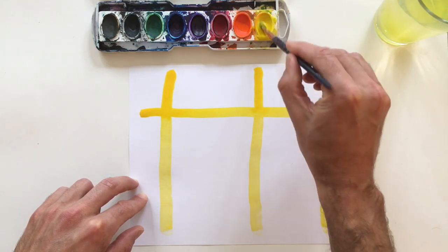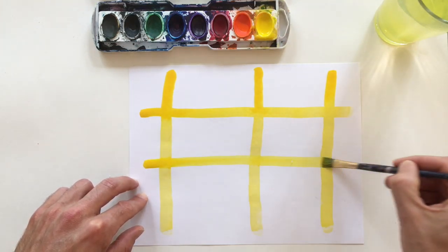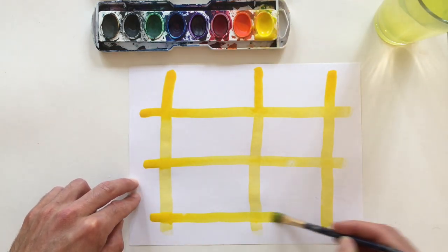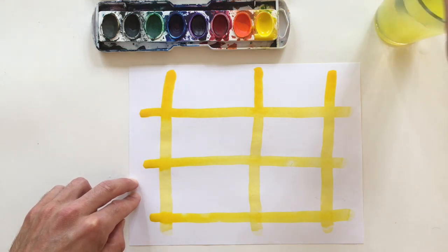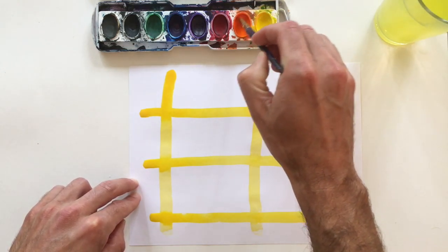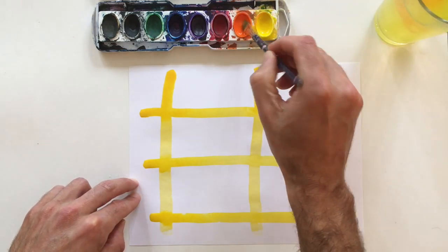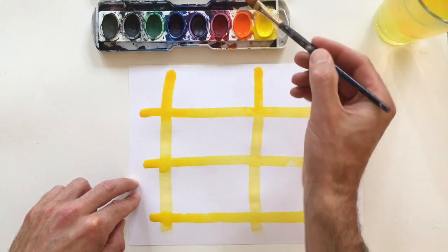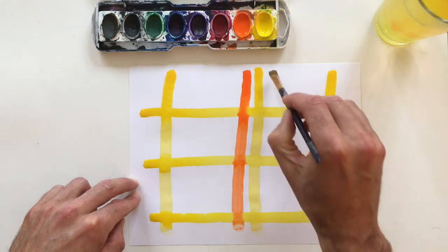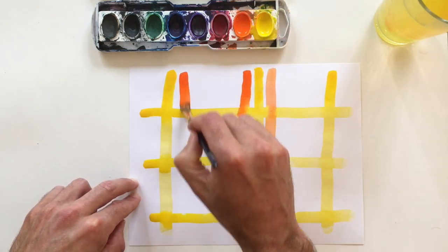I like to use a lot of water in my watercolors and start with one color. I put some yellow lines down, some going horizontal—that means side to side—and some going vertical, that means up and down.